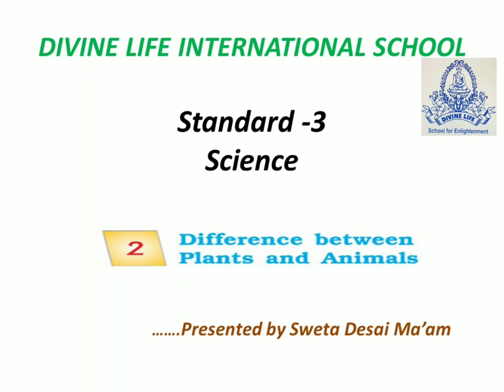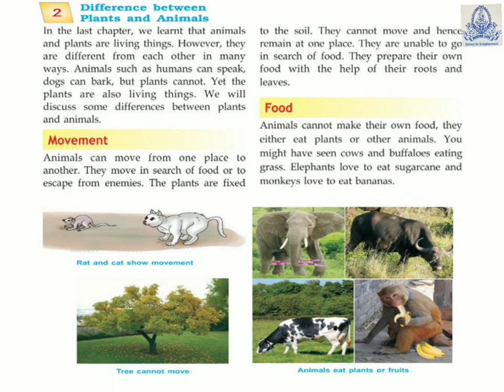Hello students, good morning. I am your science teacher explaining the second chapter: differences between plants and animals. In the last chapter we learned that animals and plants are living things; however, they are different from each other in many ways. Animals such as humans can speak, dogs can bark, but plants cannot — yet plants are also living things.